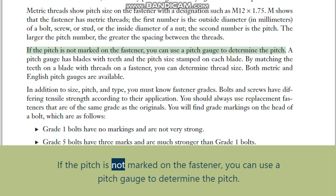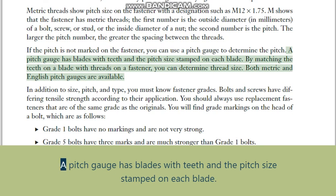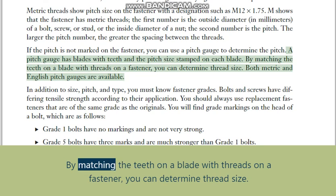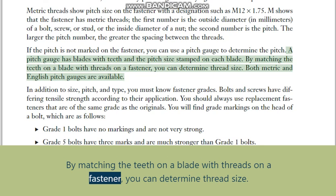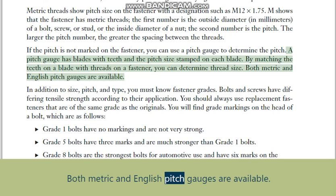If the pitch is not marked on the fastener, you can use a pitch gauge to determine the pitch. A pitch gauge has blades with teeth and the pitch size stamped on each blade. By matching the teeth on a blade with the threads on a fastener, you can determine thread size. Both metric and English pitch gauges are available.